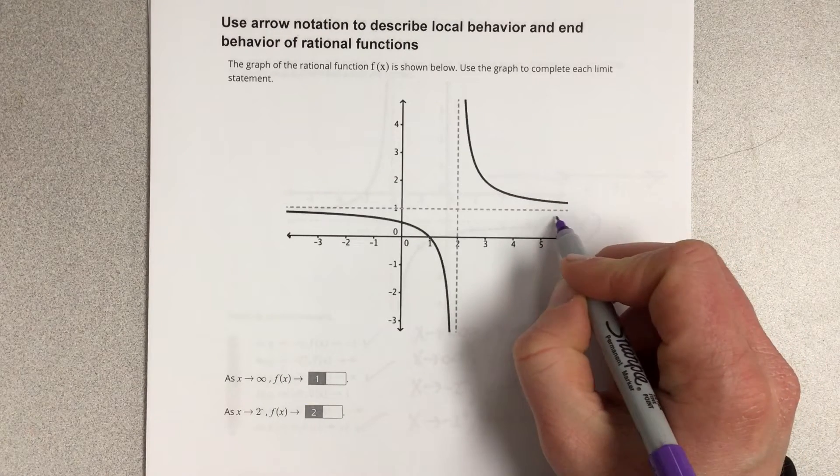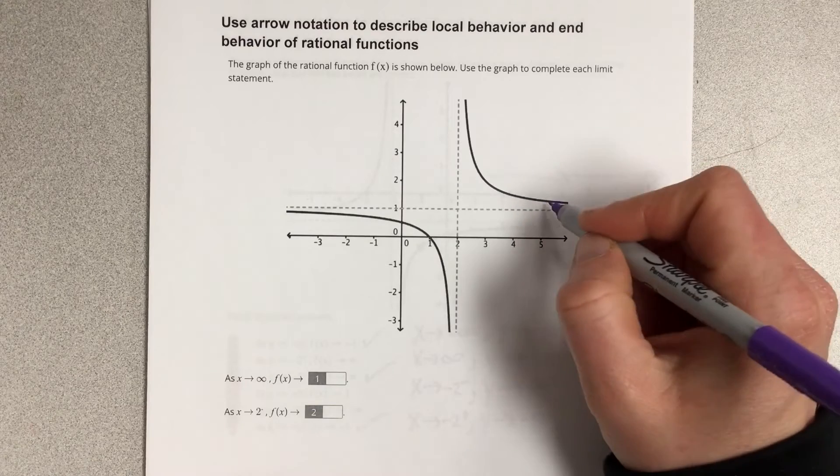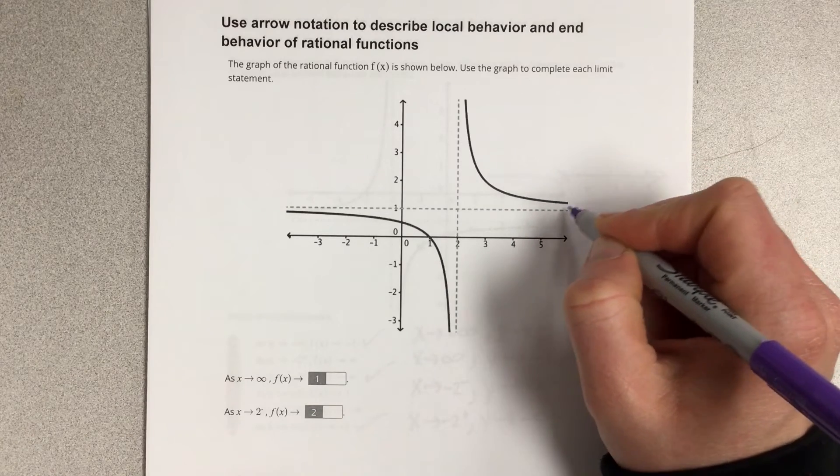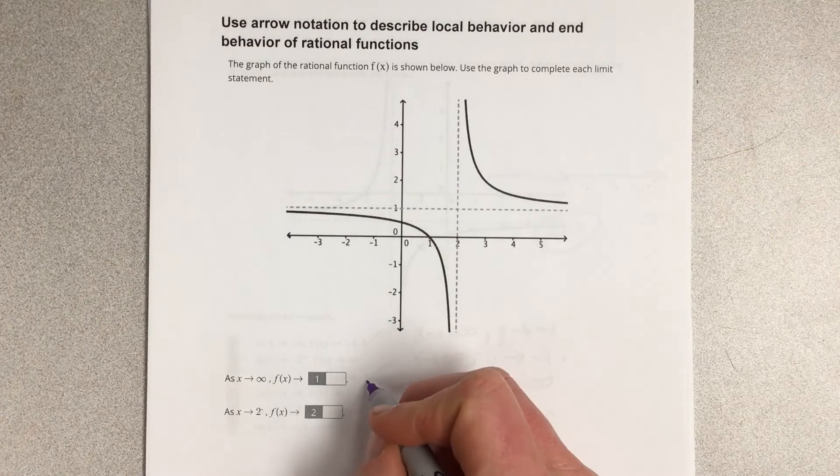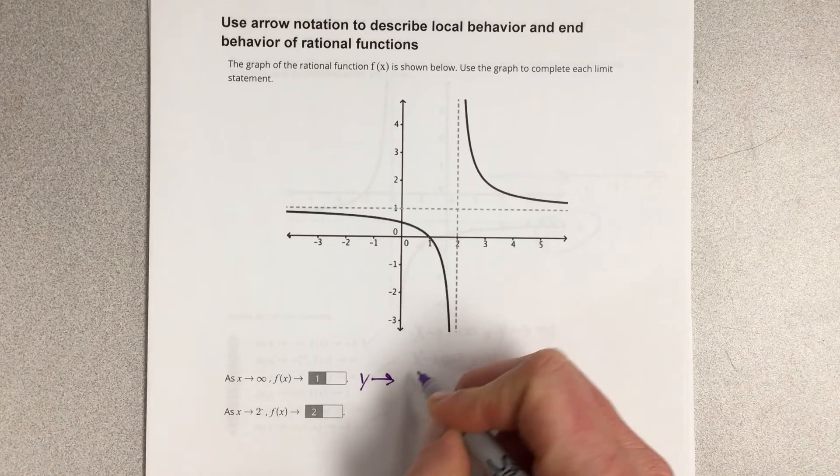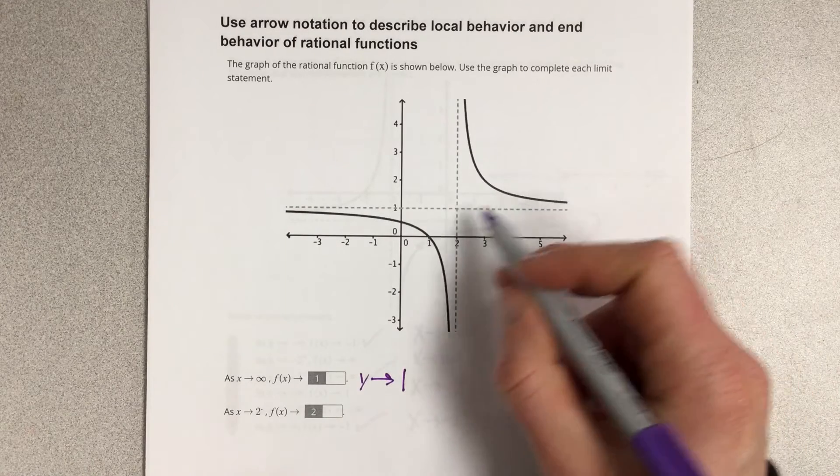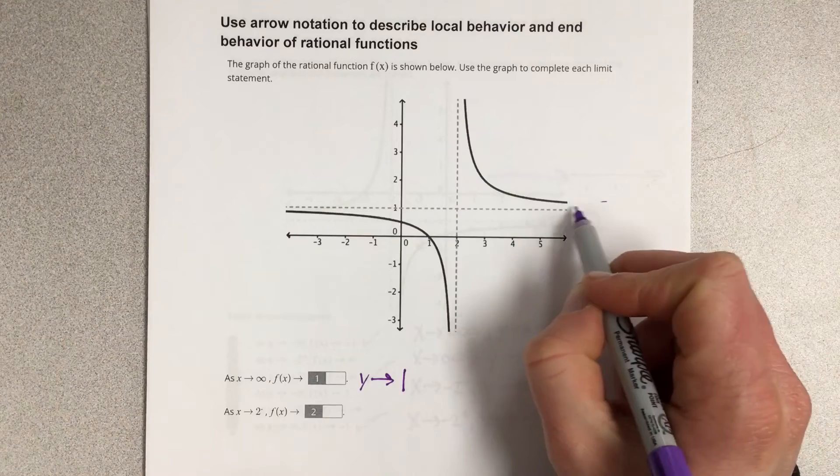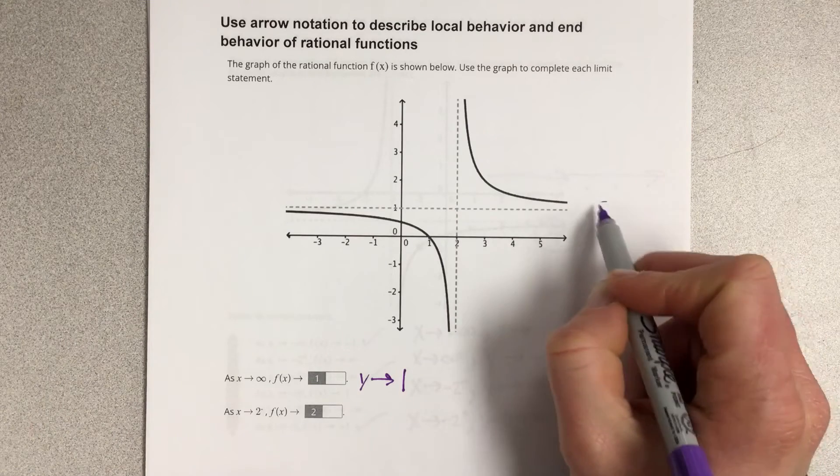So as I approach infinity, my y value over here is getting closer and closer to 1. So that would say that y is approaching 1 because the x value, as I go out this direction on this line, I'm approaching this value of 1.